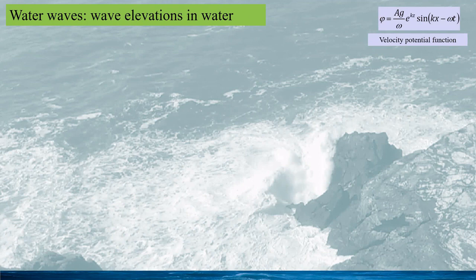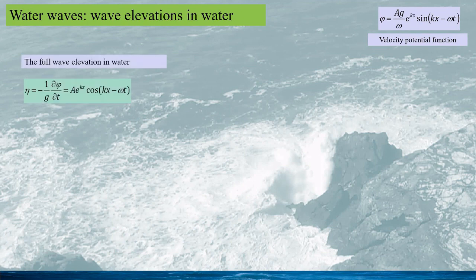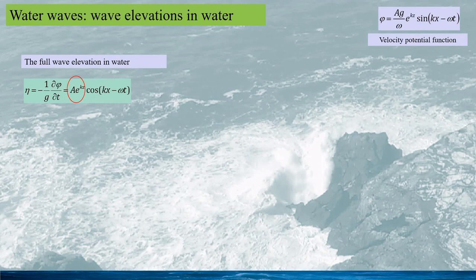One important thing to note is that the water wave does not only exist on the water surface but also in water. Based on the velocity potential function, we can calculate the full wave elevation. We can see that in different water depths, the amplitude of the wave elevation would be different — more specifically, the wave amplitude in water decreases with the increase of water depth.